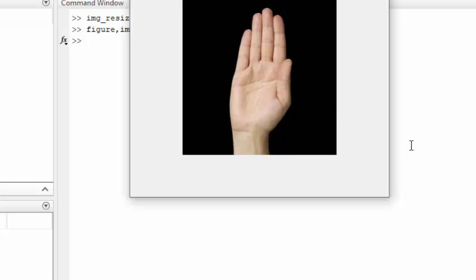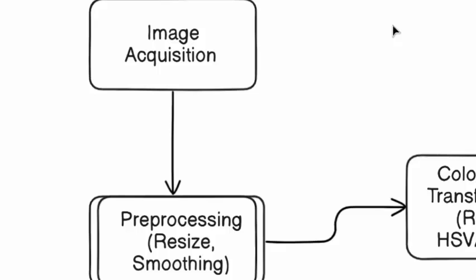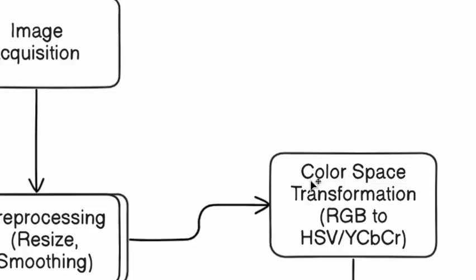The next step is to segment the skin color, which is the main topic of today's video. For that we need a color space transformation. The image we read from disk is in RGB color space — red, green, and blue — which you are likely familiar with. There are two other color spaces we can use for skin segmentation: HSV and YCbCr.